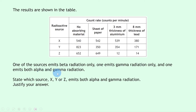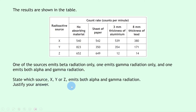We're told one source emits beta radiation only, one emits gamma radiation only, and one emits both alpha and gamma radiation. The question asks: which source — X, Y, or Z — emits both alpha and gamma radiation? Justify your answer.